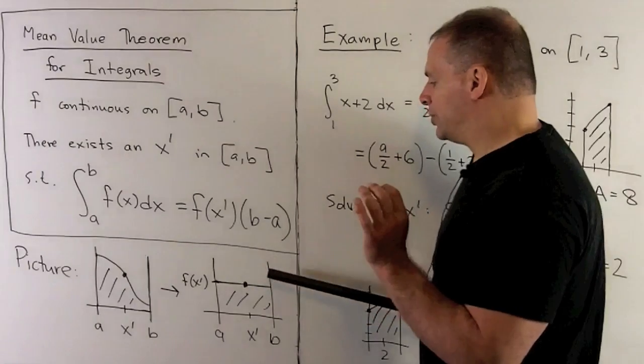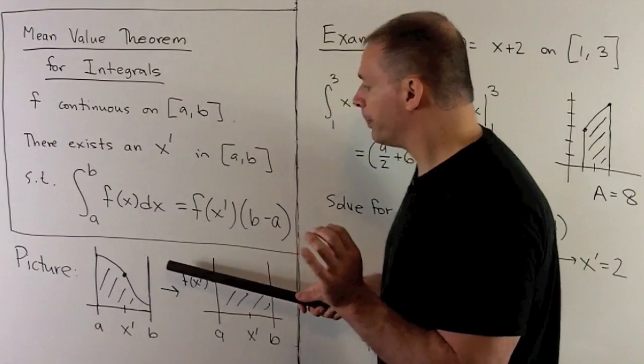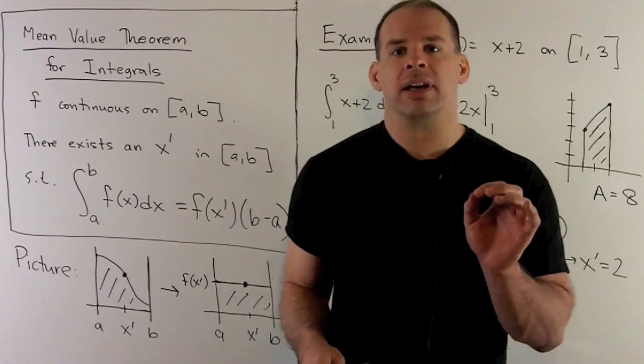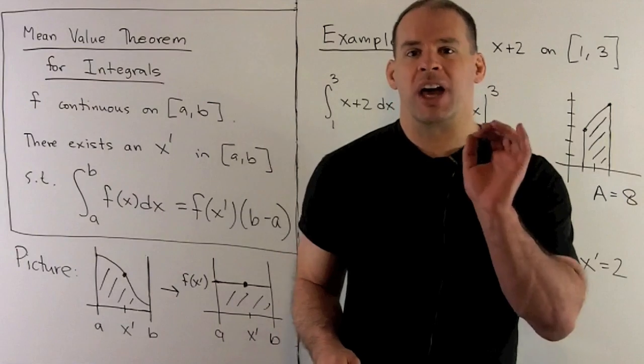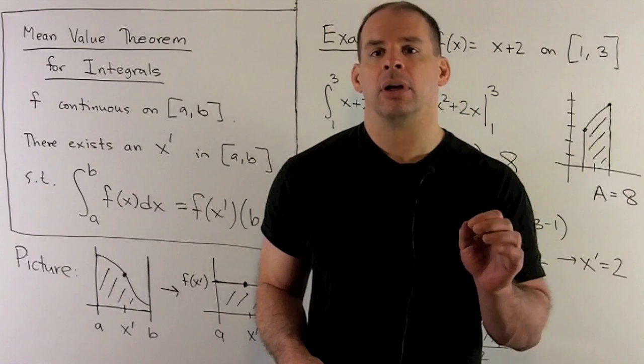Then, if we just draw that line in our original picture, then that horizontal line is going to cut our graph at some point. It may cut it in a few points, but it's going to cut it in at least one point.